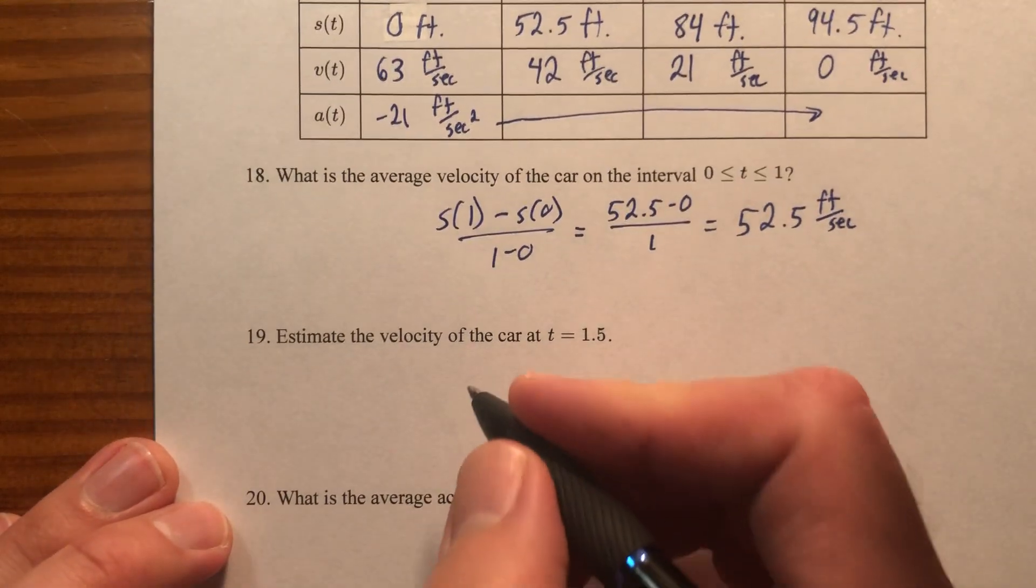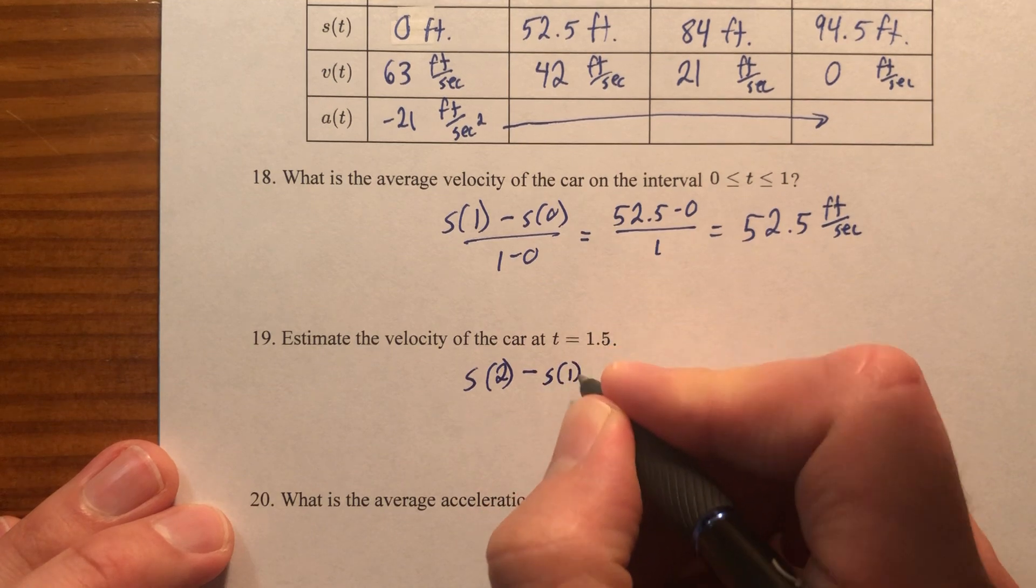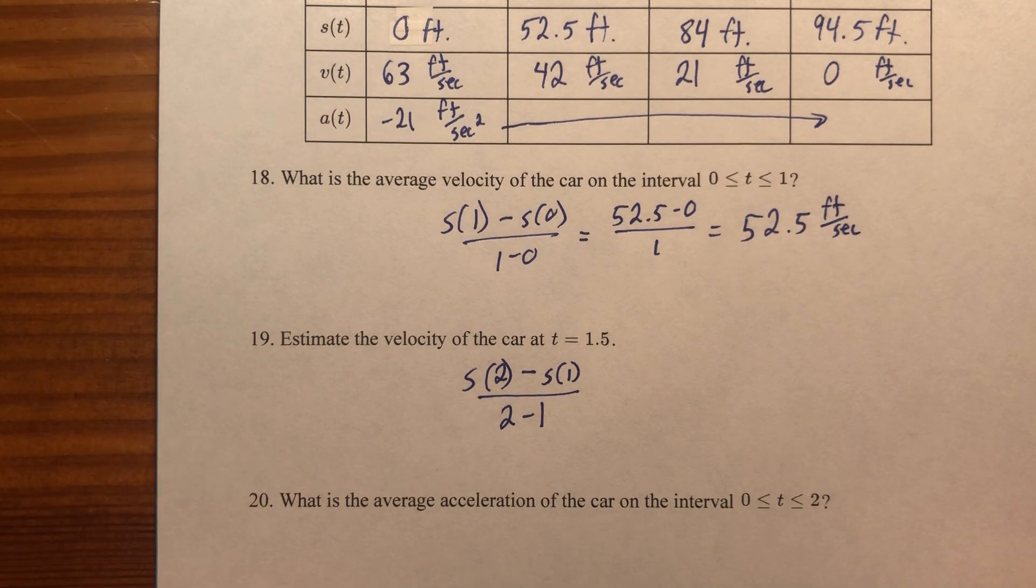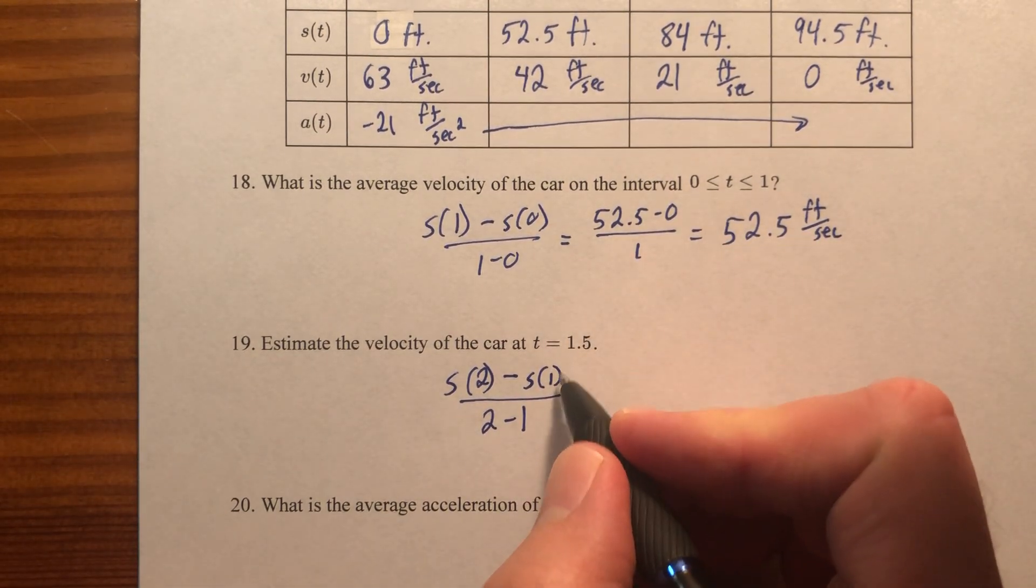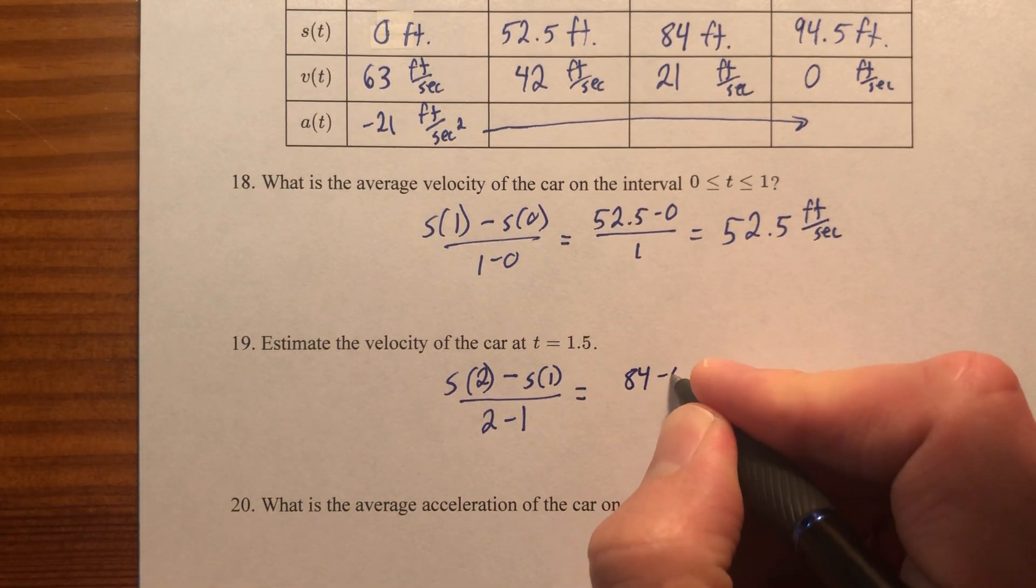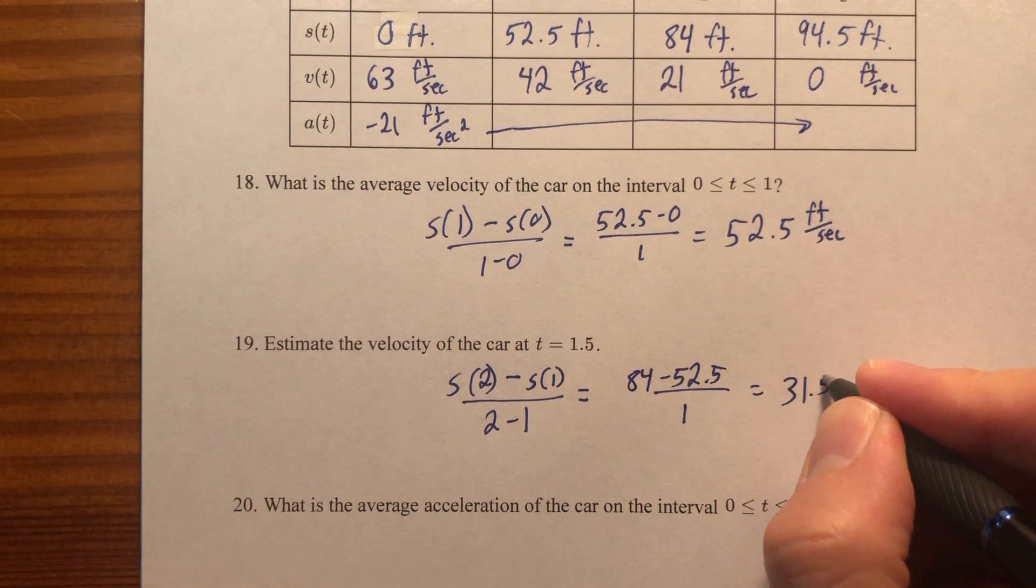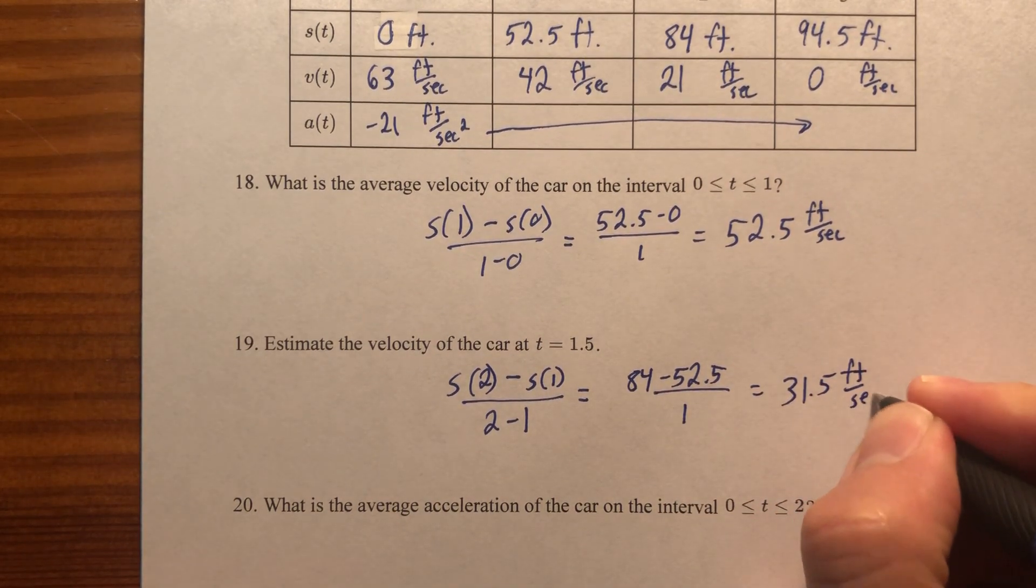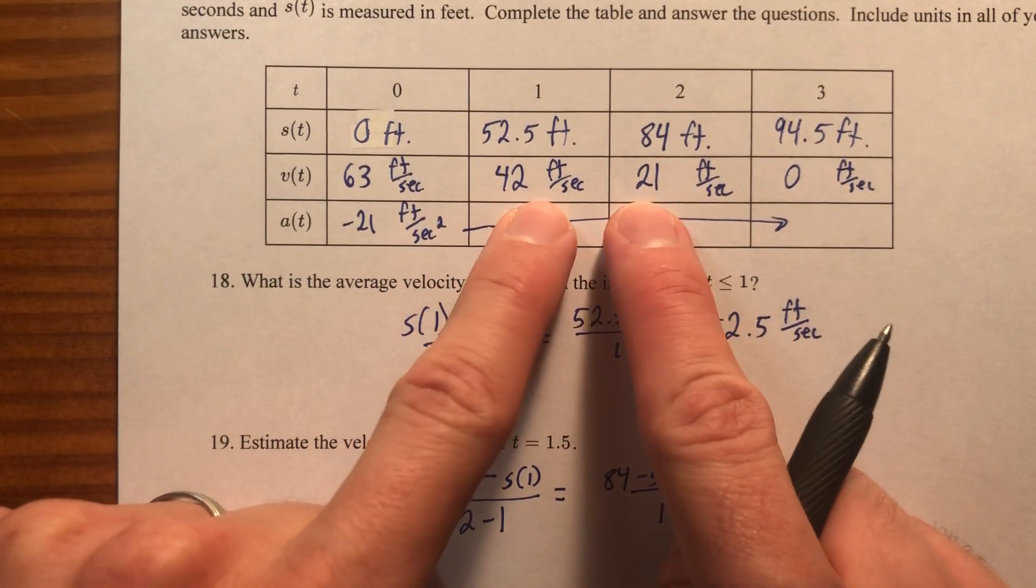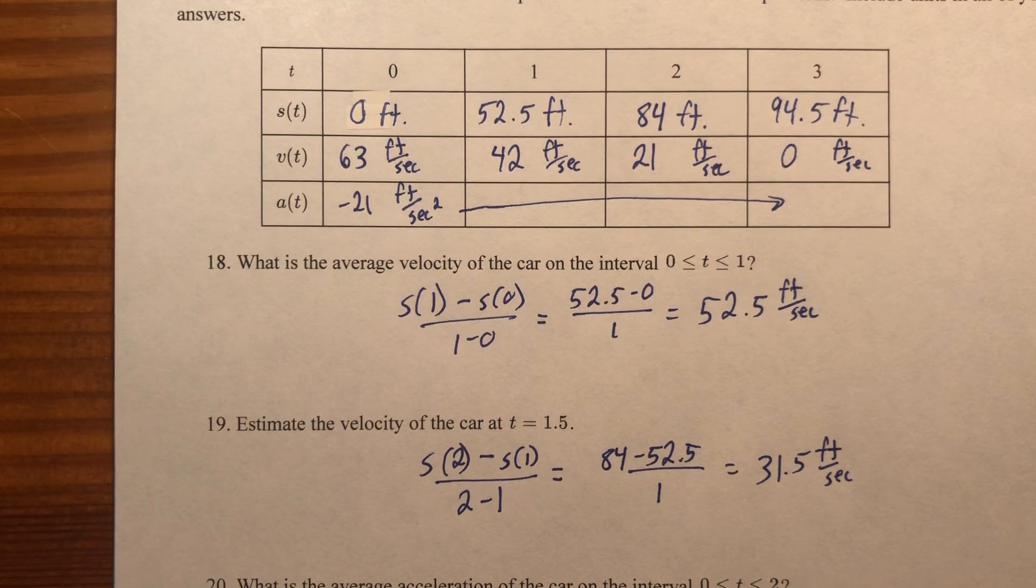The velocity is the slope of displacement. So I'm going to find the slope between the two points around one and a half. Doing so is going to give me feet per second, which is a measurement of velocity. That's going to give me 84 minus 52 and a half over 2 minus 1, which is 31 and a half feet per second. If you wanted to estimate by averaging these two, we're not guaranteed to get the exact same value. It's not always a safe bet.